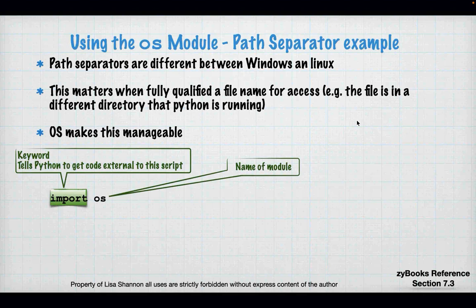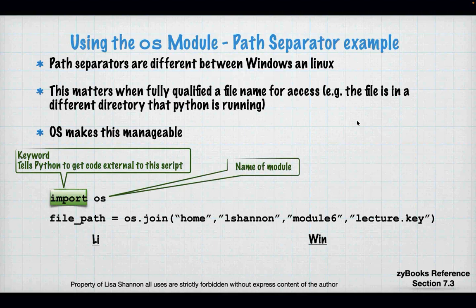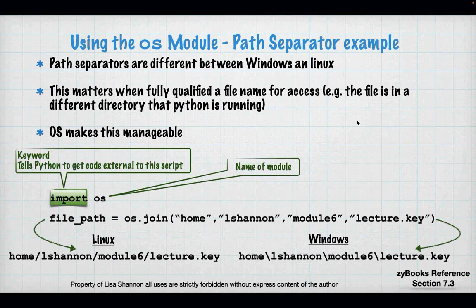After the keyword import, you are going to use the characters OS — that's the module name in this case. So let's say I have a Windows machine and I have a Linux machine, and under Home L Shannon, Module 6, Lecture.key — I want to be able to get the right file path no matter whether I'm on Windows or on Linux. So on Windows and Linux, because I'm using the OS module, that's what it's going to give me — and on Windows it's going to give me the correct slashes.